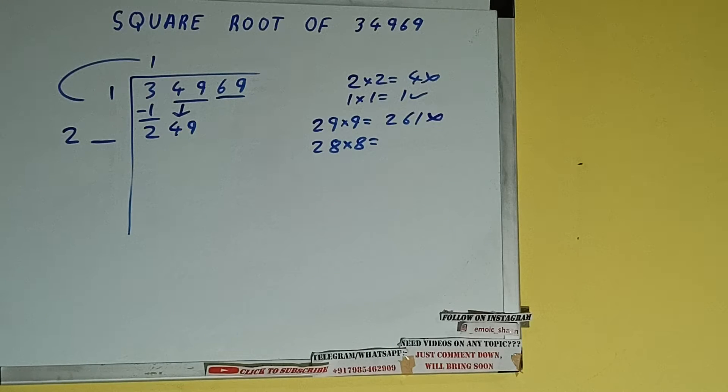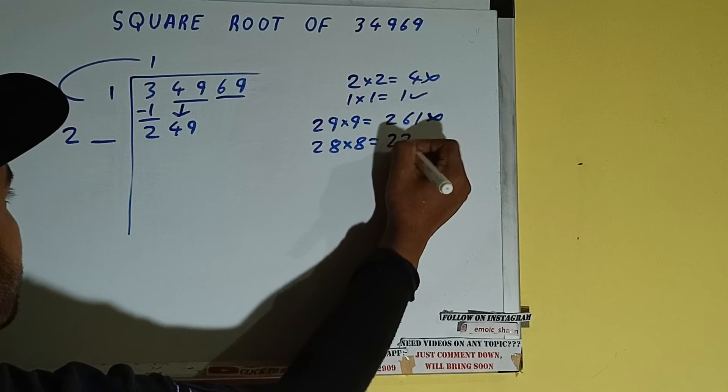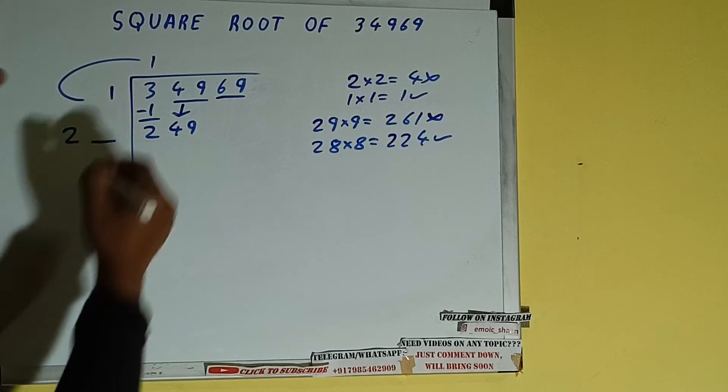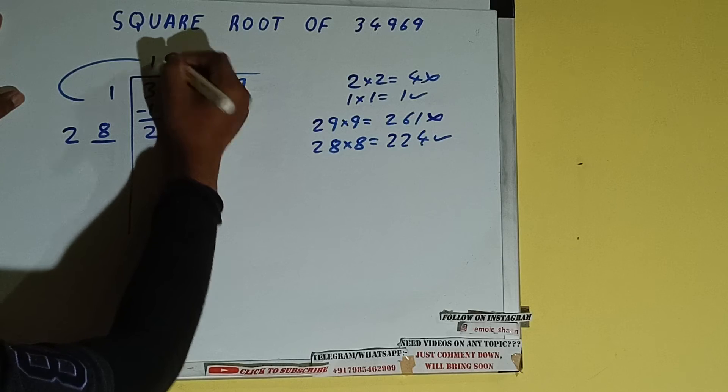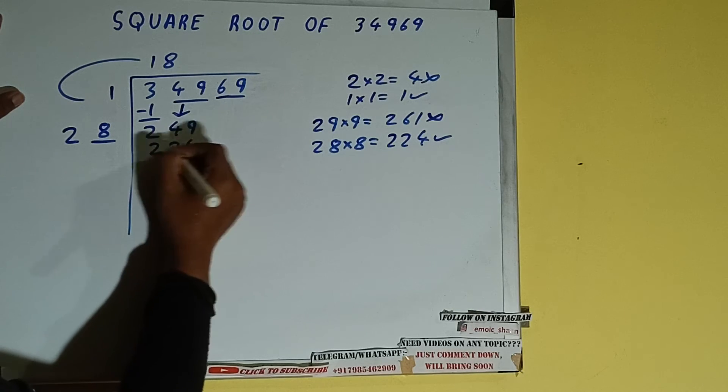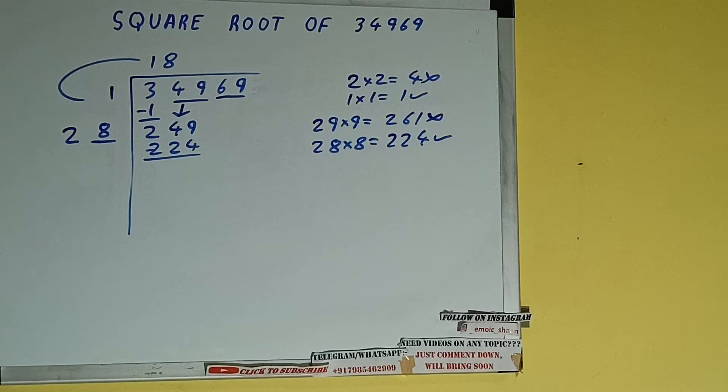So 8 here and 8 here. 224 subtract, and 25 will be left.